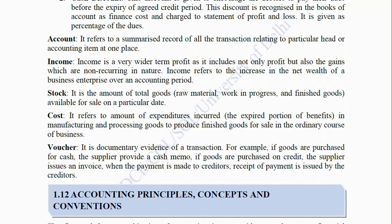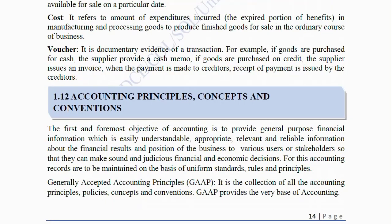Inventory (Stock): It is the amount of total goods, raw material, work in progress and finished goods available for sale on a particular day. Cost of Production: It refers to the amount of expenditures incurred — the expired portion of benefits — in manufacturing and processing organizations to produce finished goods for sale in the ordinary course of business. Voucher: It is the documentary evidence of a transaction. For example, if goods are purchased for cash, the supplier provides a cash memo; if purchased on credit, the supplier issues an invoice; and when payment is made to creditors, a receipt of payment is issued by the creditors.